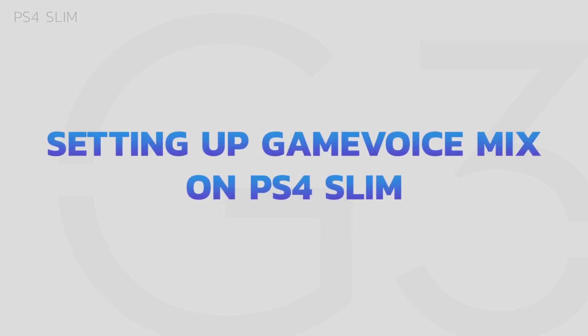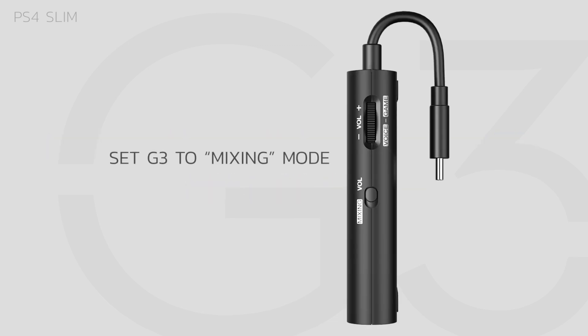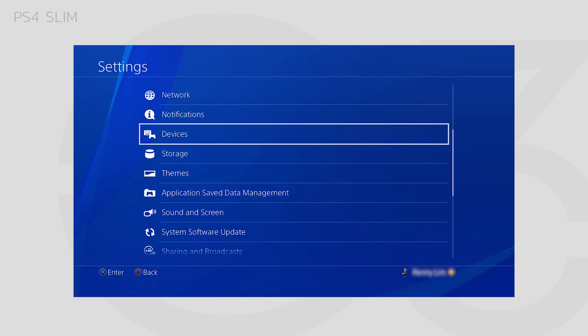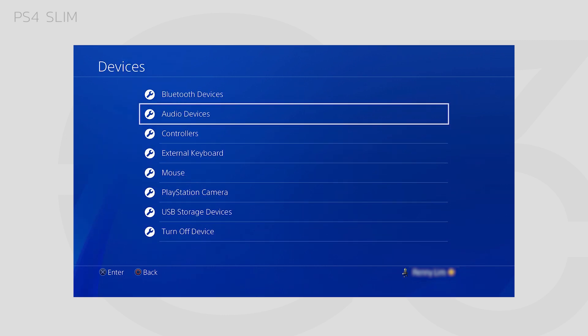Setting up Game Voice Mix on PS4 Slim. Make sure your G3 is set to Mixing Mode. Under your Audio Settings, navigate to Devices, then Audio Devices.